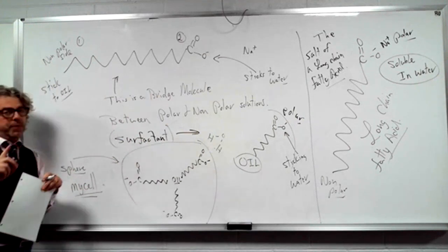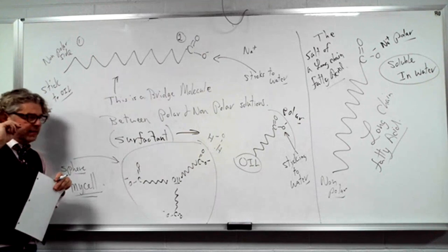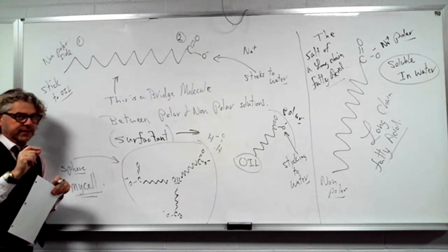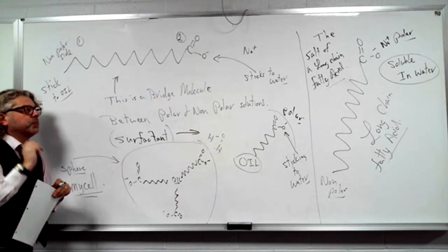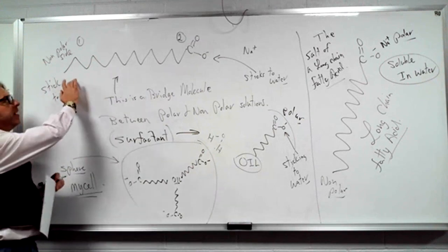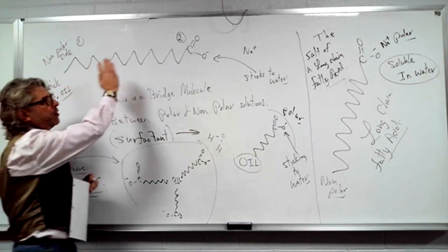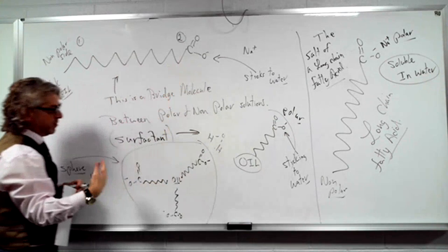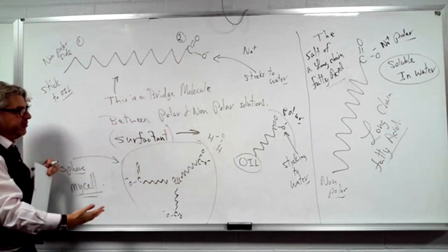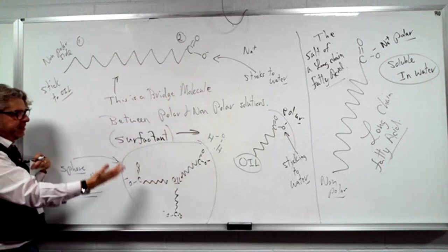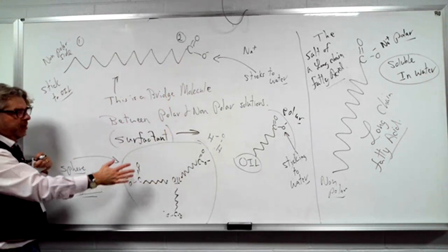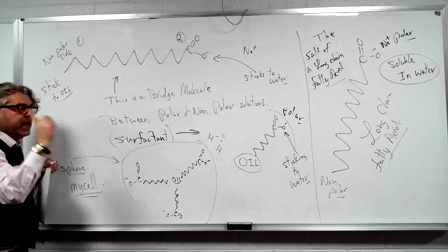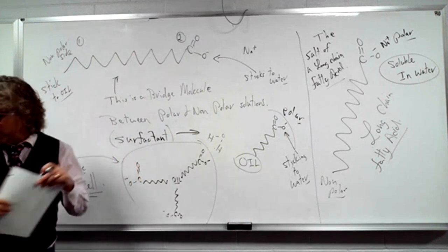So soap is a soluble salt of a long-chain fatty acid. It's a bridging molecule — one side sticks to oil, one side sticks to water. In three dimensions it surrounds the oil, and the oil can be pulled out of your clothes. Now that's useful.